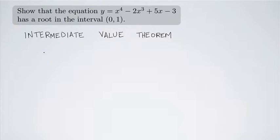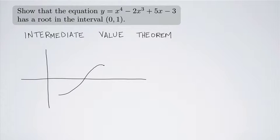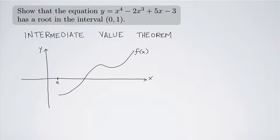For example, let's suppose we have a y-axis and an x-axis, and we have some continuous function f(x) on an interval from a to b. If we know that the function starts out below the axis at a and ends up above the axis at b, then somewhere in that interval it must have crossed the axis. That's the basic idea behind the Intermediate Value Theorem.